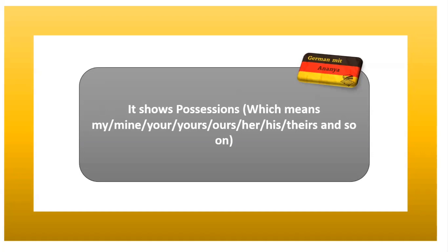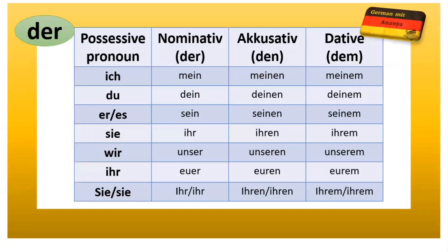Let's learn further. For 'ihr' in nominative, accusative and dative — as you know, 'ihr' in nominative is 'ihr', in accusative it is 'ihr', and in dative it is 'ihr'.